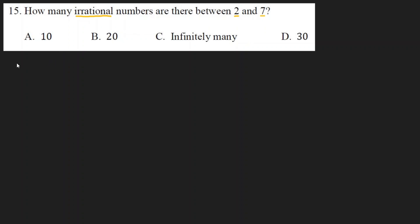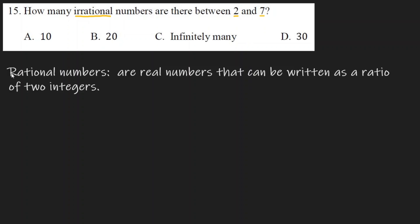Let's define rational numbers. Rational numbers are real numbers that can be written as a ratio of two integers. So they are real numbers that can be written as a ratio of two integers.